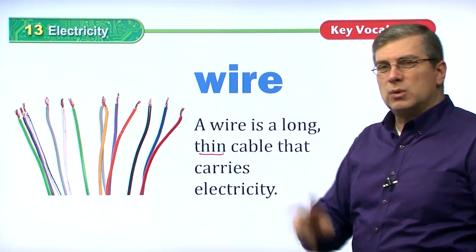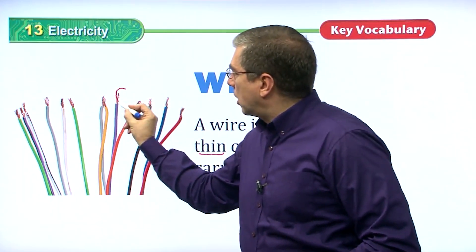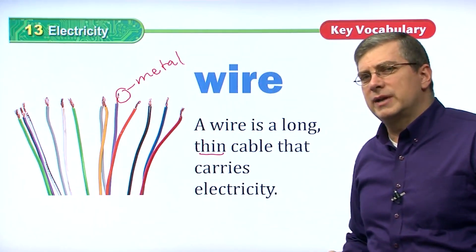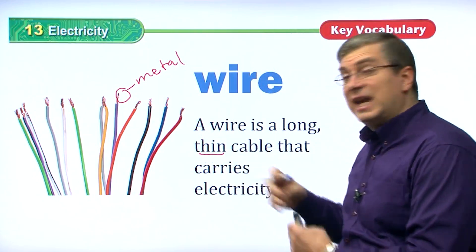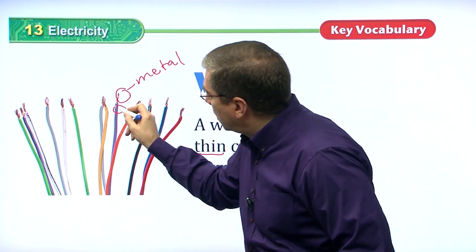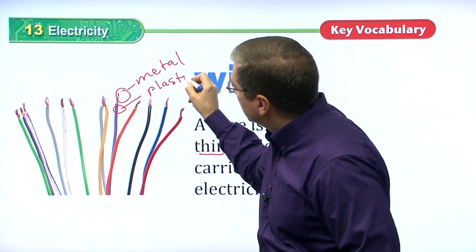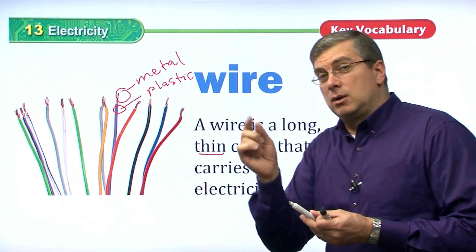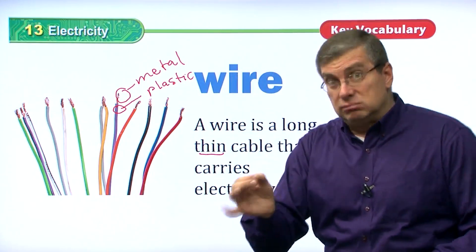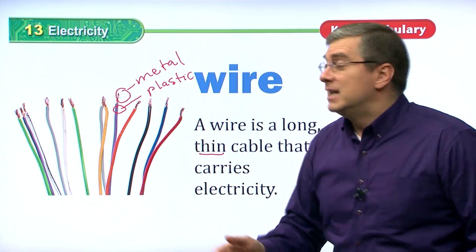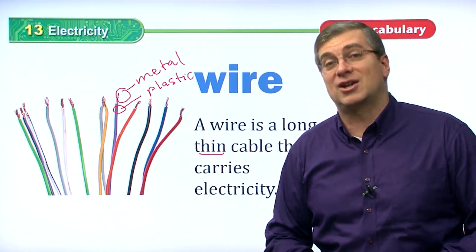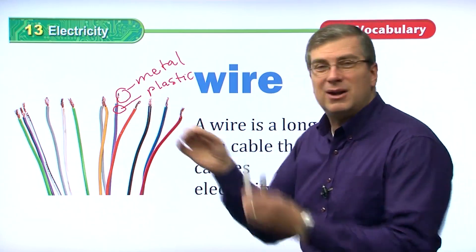A wire is a long, thin cable that carries electricity. There are really two parts to a wire: the metal part — usually copper is used to carry electricity — and this part right here, which is plastic. The plastic surrounds the metal and protects you. If you touch bare metal with electricity going through it, that's very dangerous. The plastic is protection against electricity.